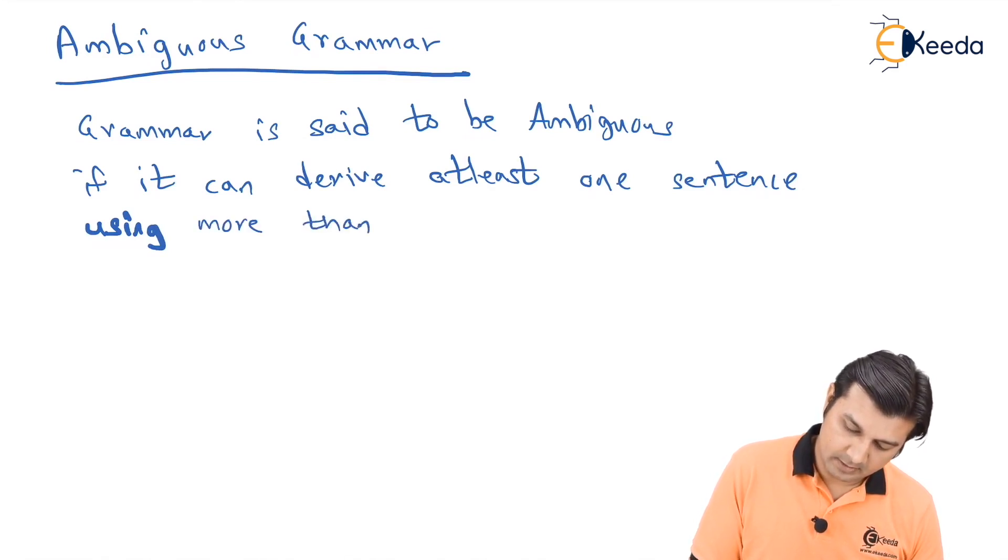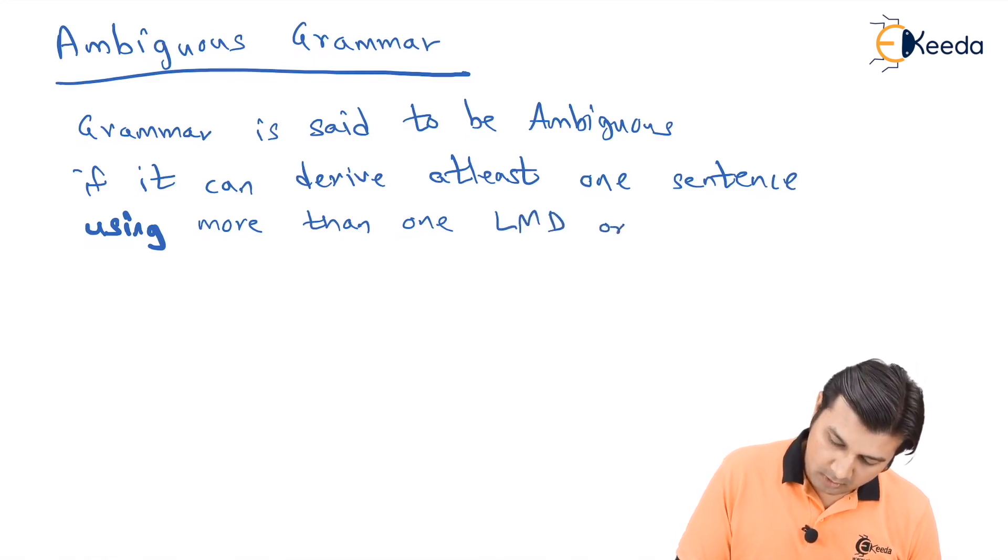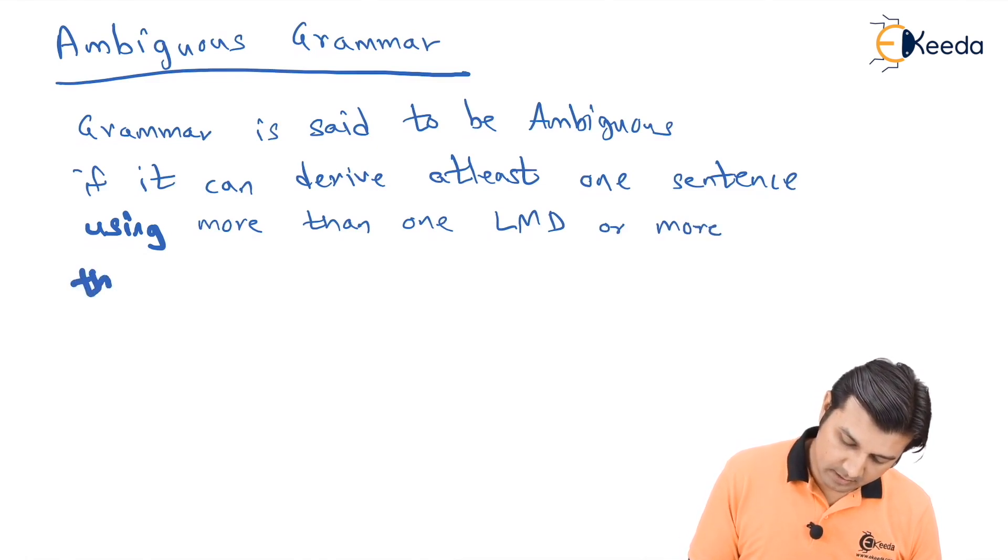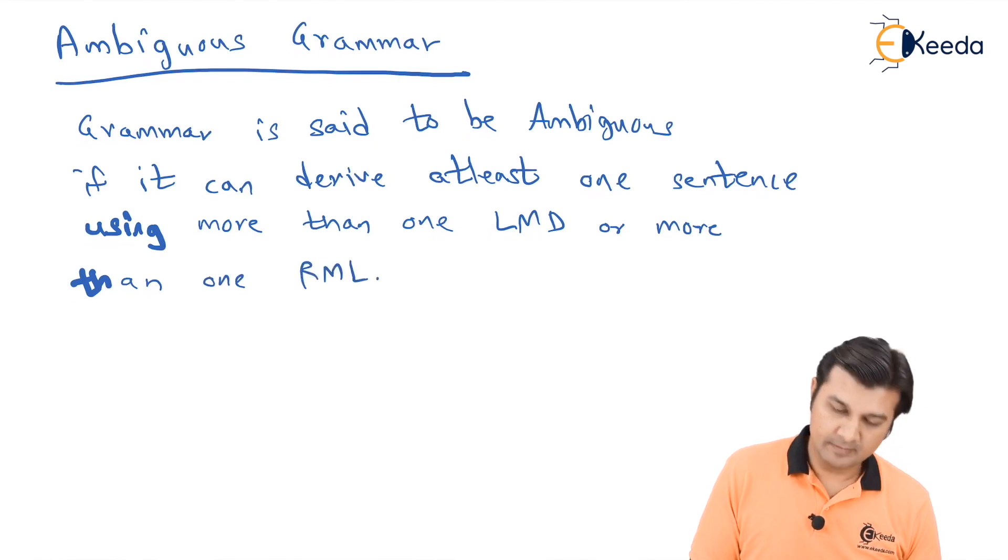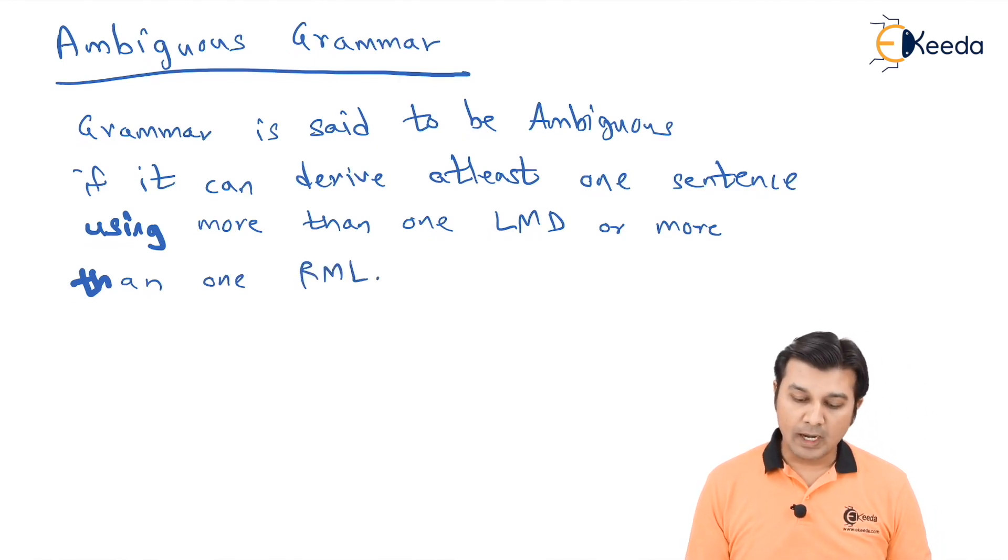more than one LMD or more than one RMD. So, grammar is said to be ambiguous if it can derive one sentence using more than one LMD or more than one RMD.